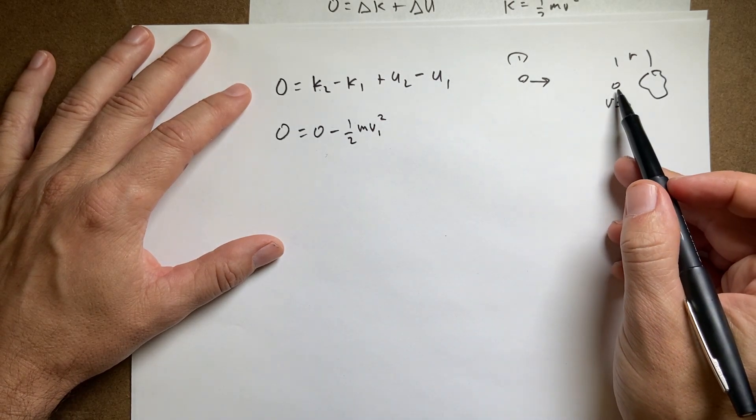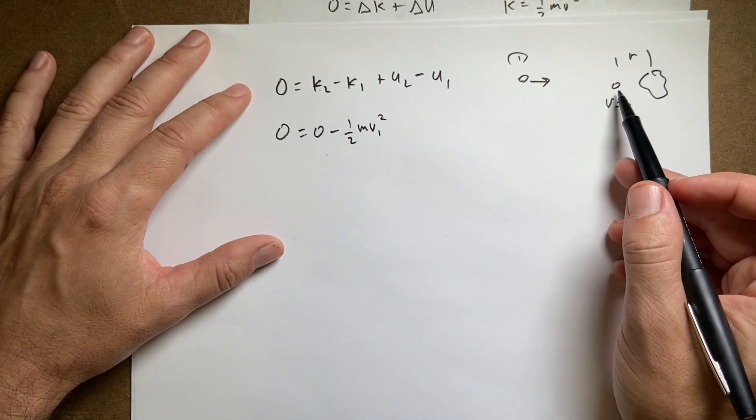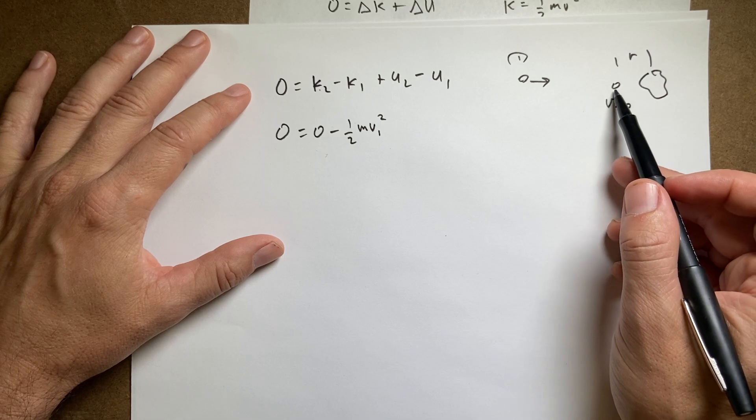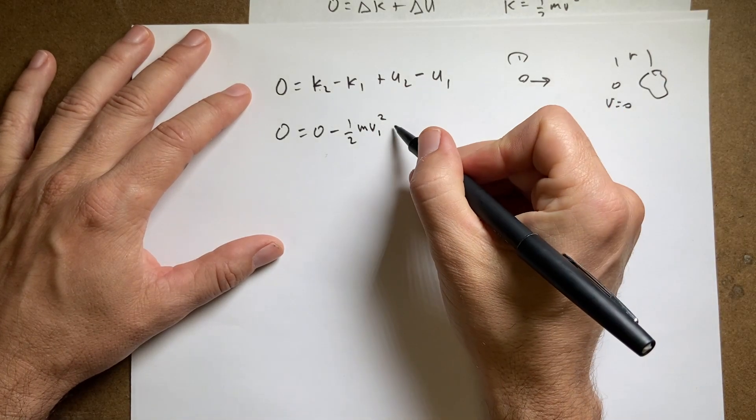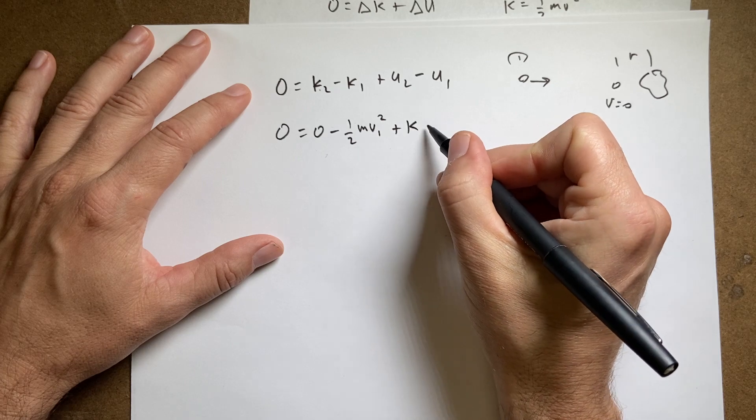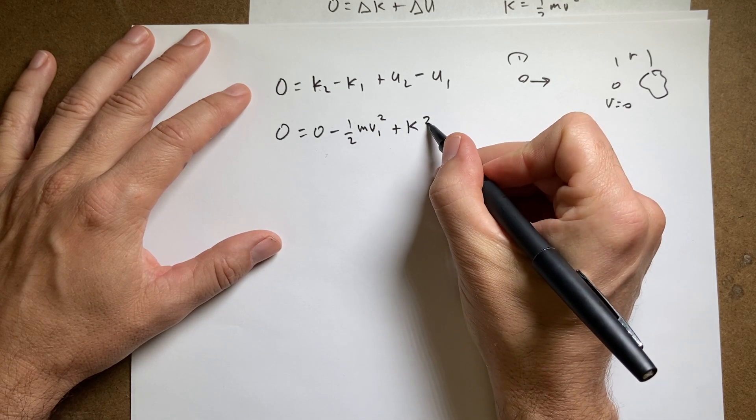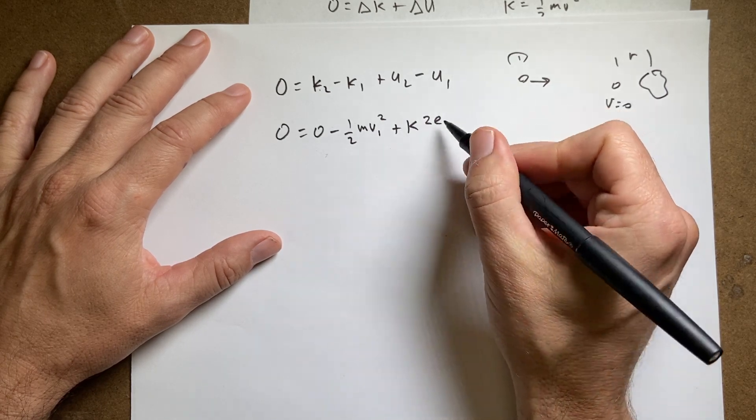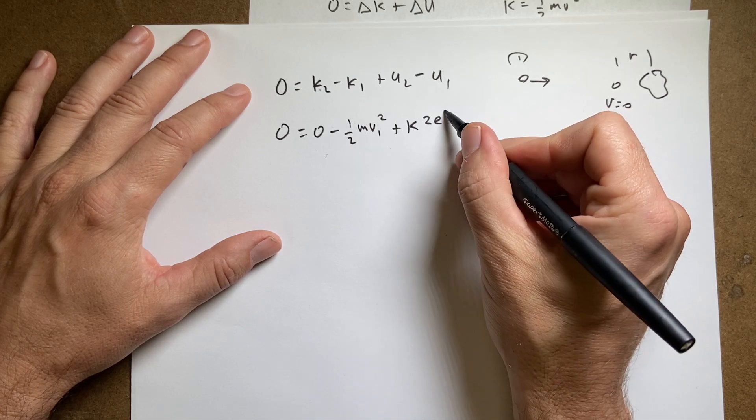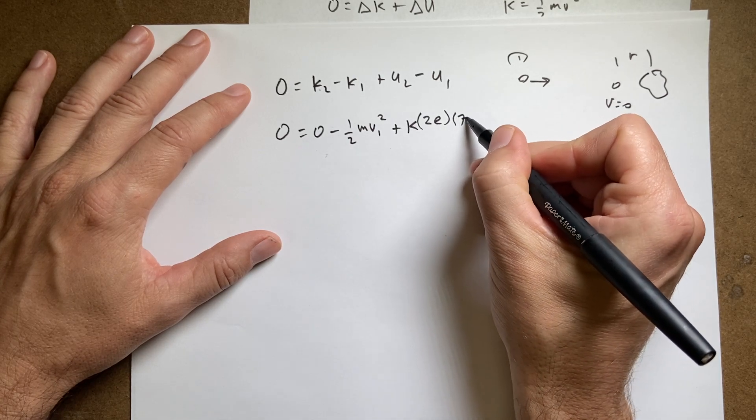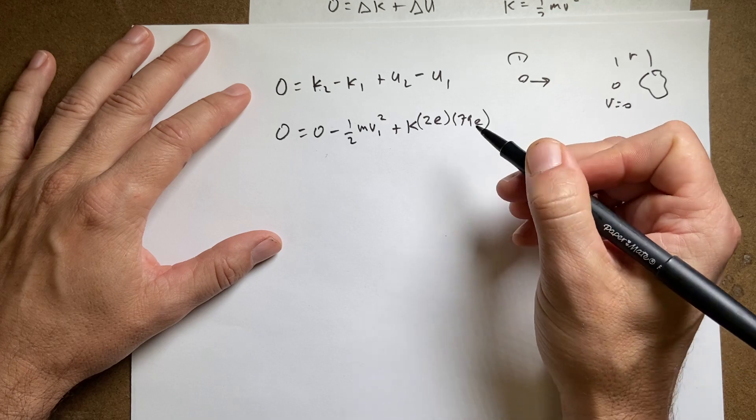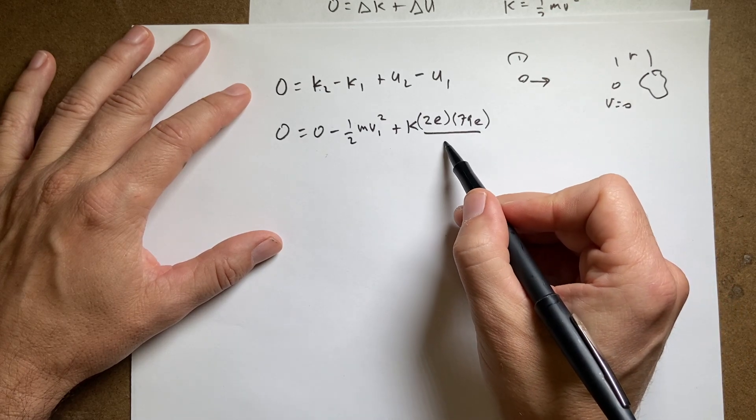U2 is right here. Not the band, the electric potential energy. So that's going to be equal to plus k times q1 which is 2e. That's the charge of the proton, the alpha particle, times 79e. That's the gold. All of that over r.